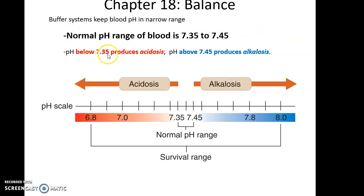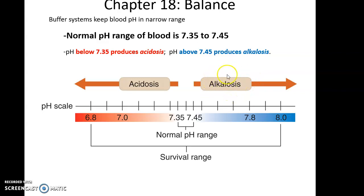When the pH of blood moves below 7.35, we are now experiencing acidosis — acidification of the blood. The more it goes down, the more dangerous it is, to the point that if blood gets too acidic, the person will die. At the other extreme, when the pH is above 7.45, the person is experiencing alkalosis. There's a certain range that is survivable, but if it gets too high, the blood becomes too basic and will also cause death.